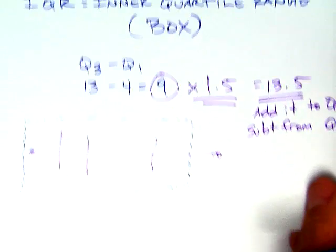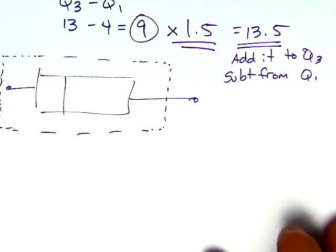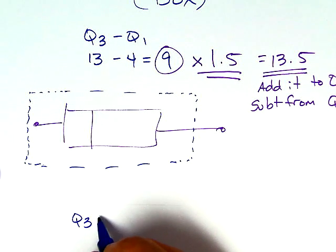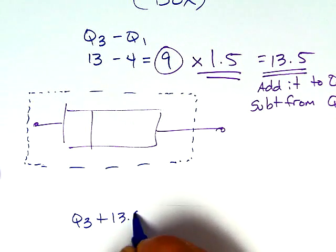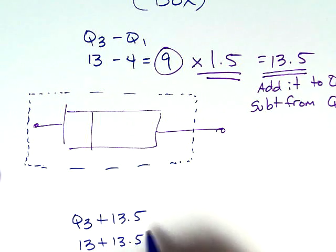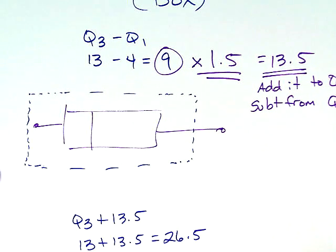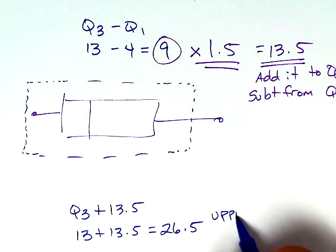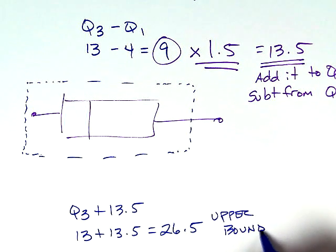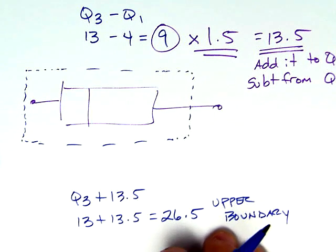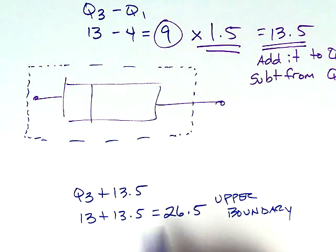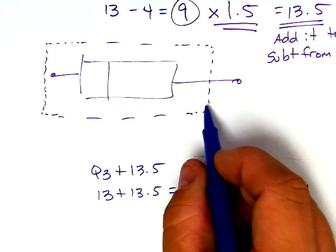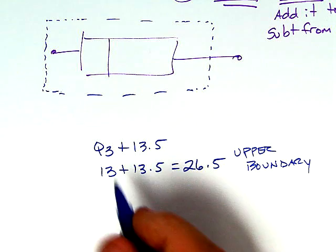With this magical number of 13.5, we're going to take Q3, which we already know is 13. We're going to take Q3 and add 13.5, so that's 13 plus 13.5, and that equals 26.5. That right there becomes the upper boundary. As you get further in math you'll call that a limit, but boundary is perfect. That's the highest value that is allowed in this data set.